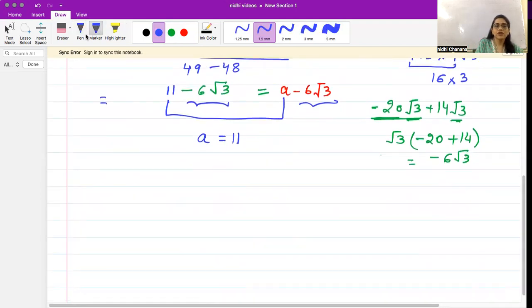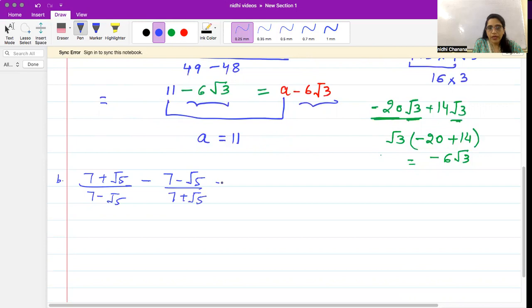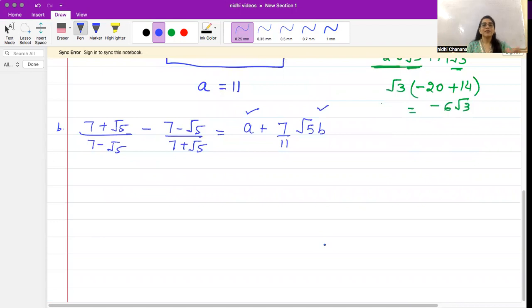Now let's move to the next question. We'll take a question in which we will find two variables' values, which would be a as well as b. So the question is (7 + √5)/(7 - √5) minus (7 - √5)/(7 + √5) equals a + 7/11 √5b. These are two variables: a and b. We have to find both values. Again, first we try to simplify this part, and then we'll see if rationalization is required.